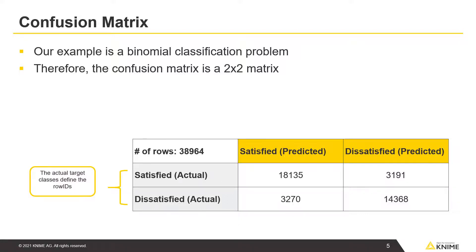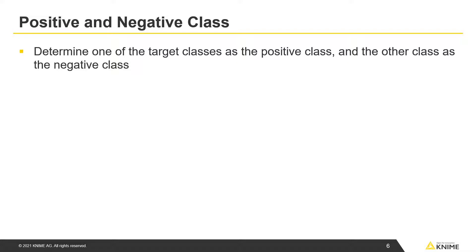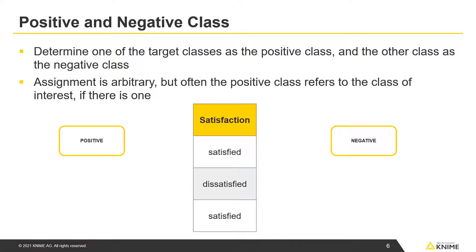The actual target classes define the row IDs, and the predicted target classes define the column headers. The first thing to do is to determine one of the target classes as the positive class and the other as the negative class. Assignment is arbitrary, but often the positive class refers to the class of interest, if there is one. We assign satisfied as the positive class and dissatisfied as the negative class.